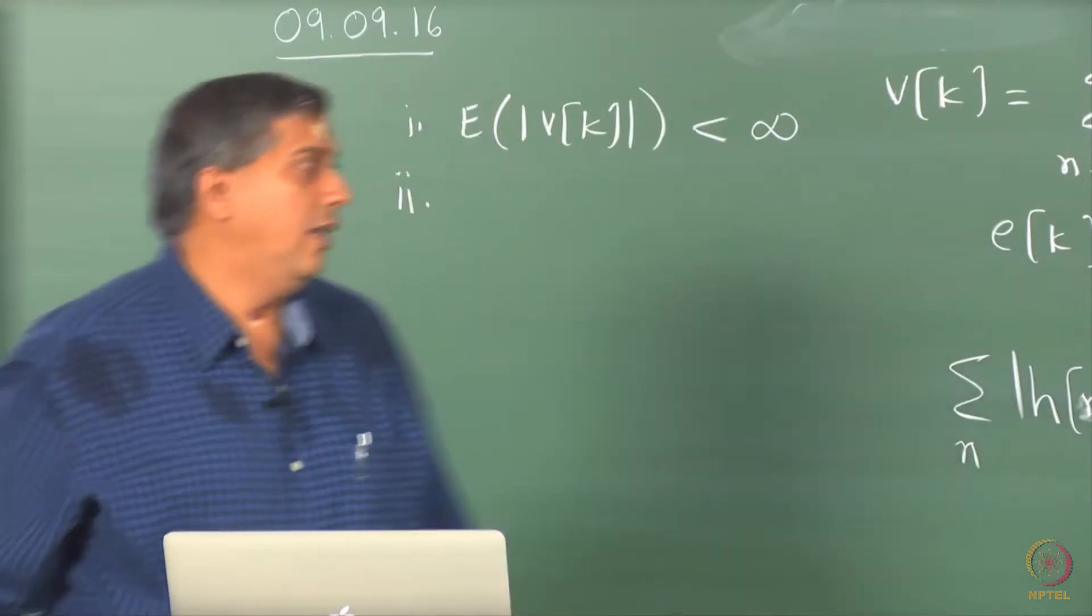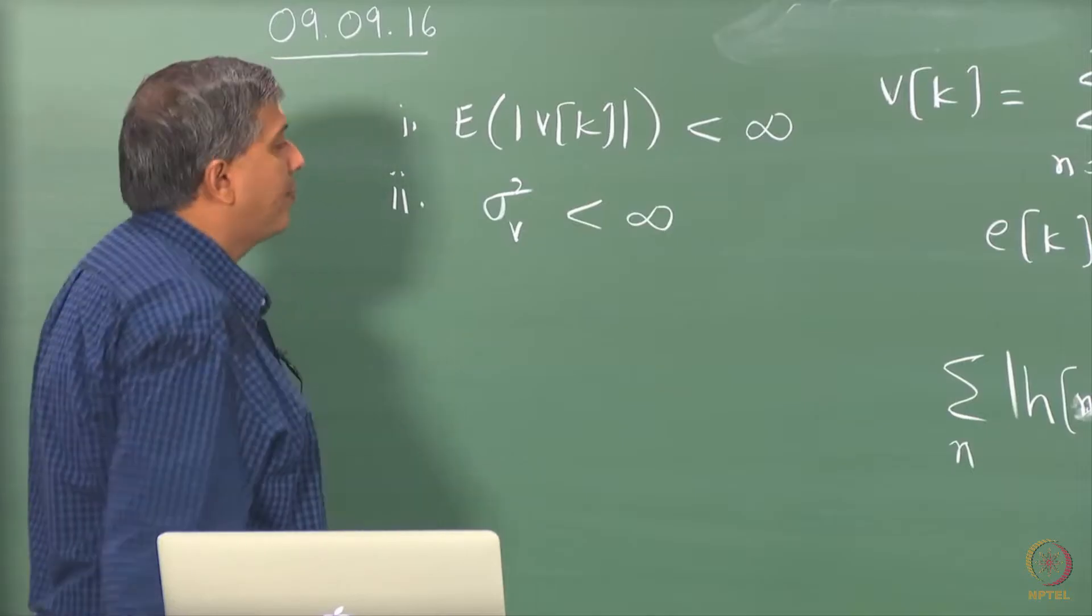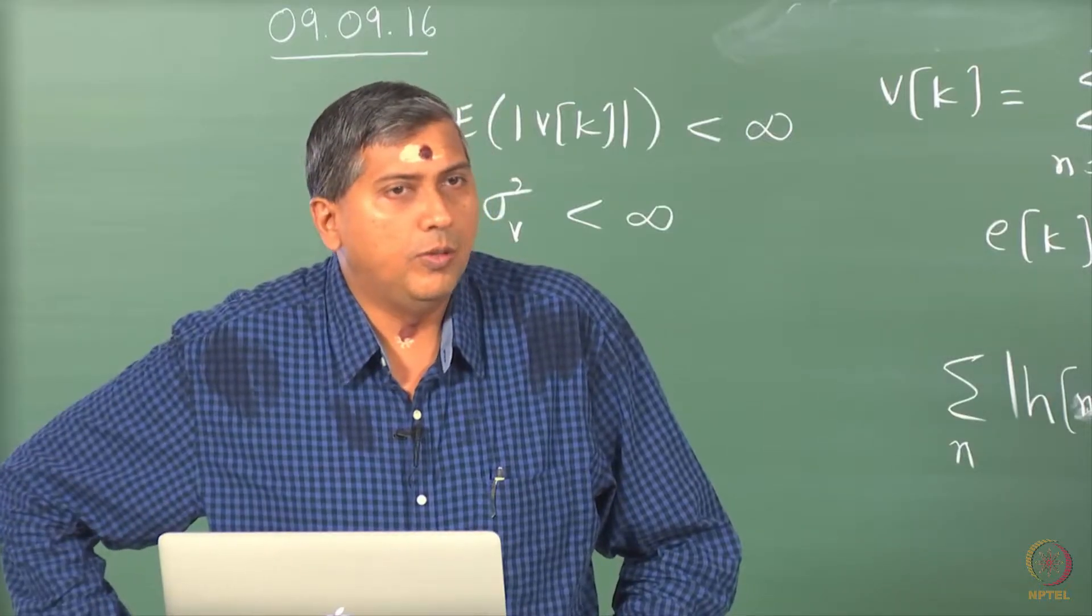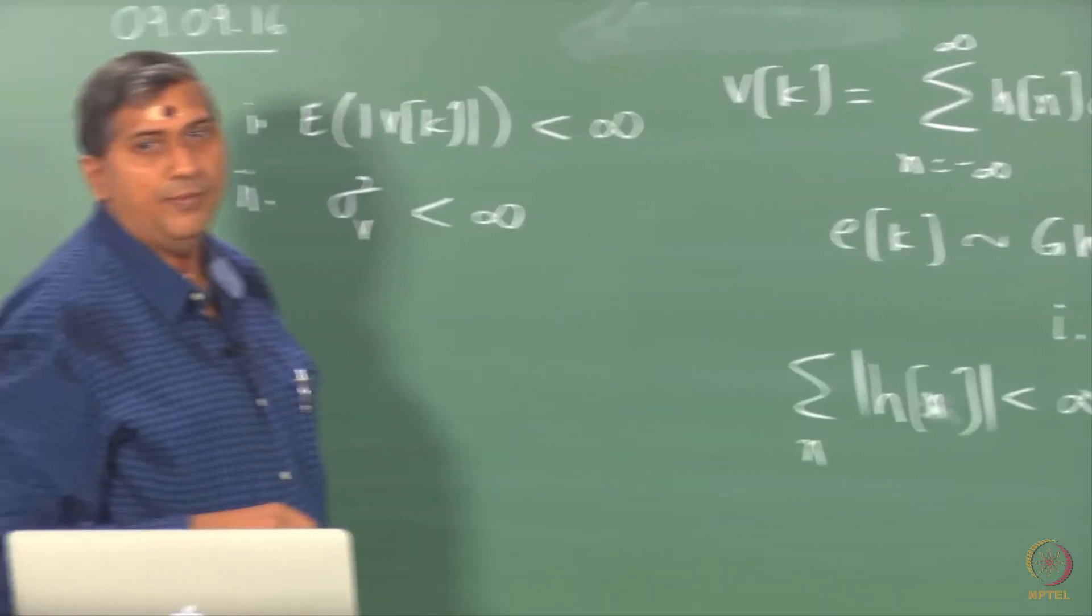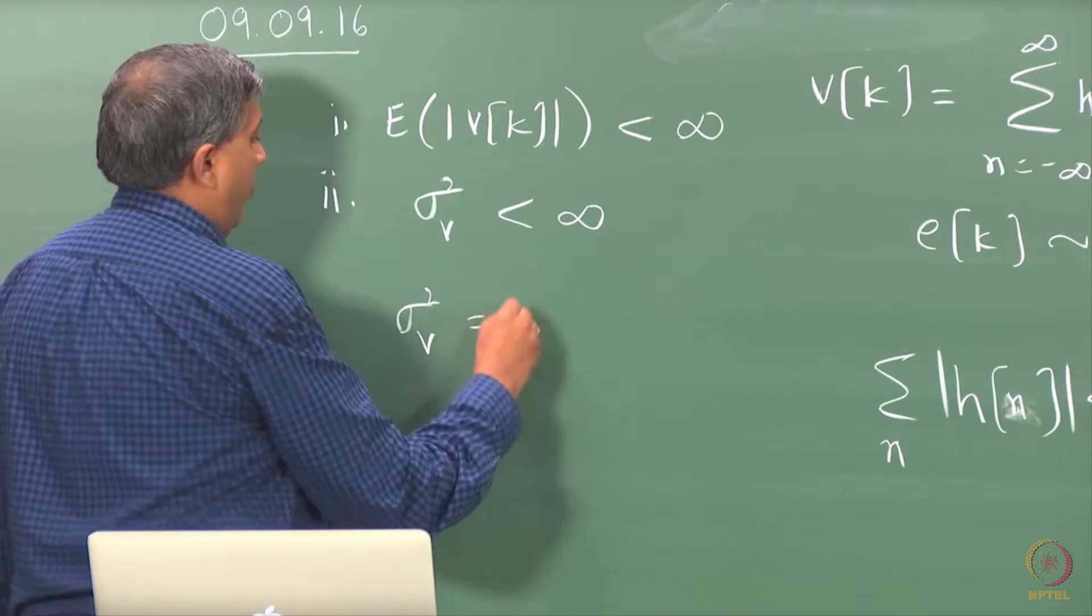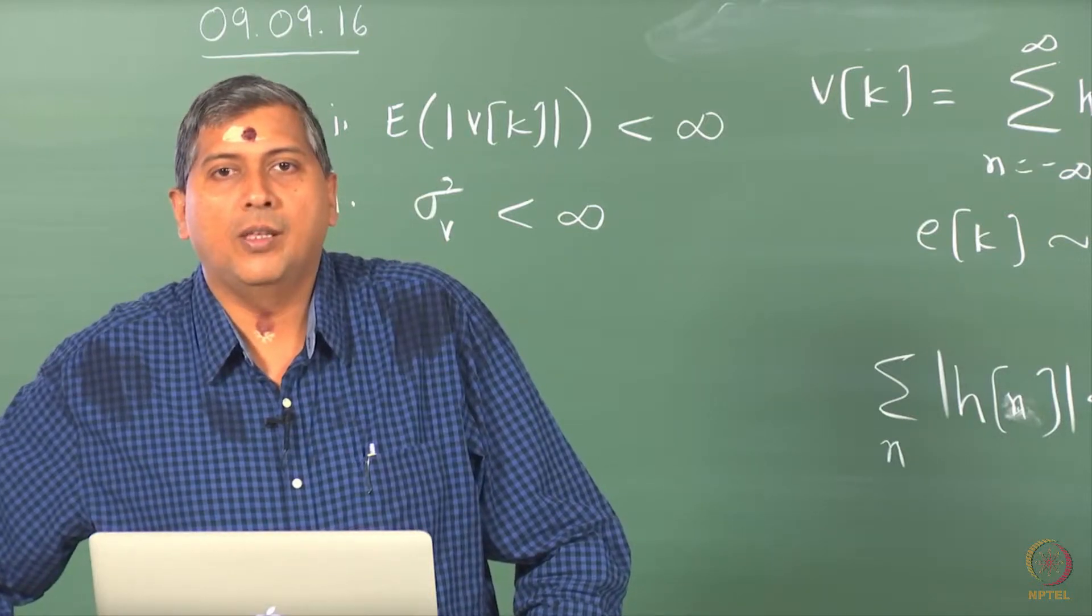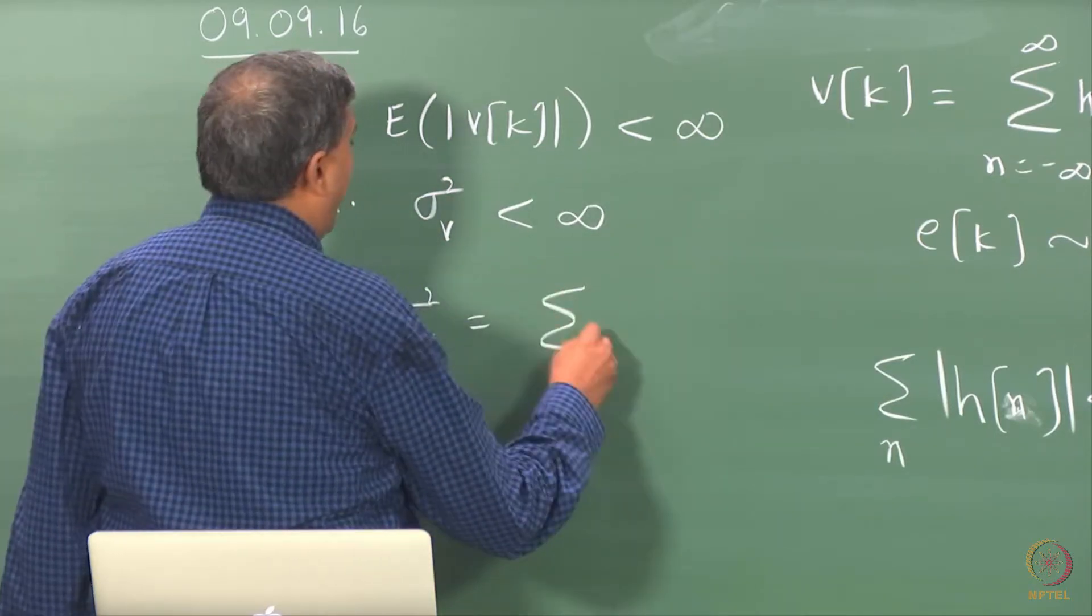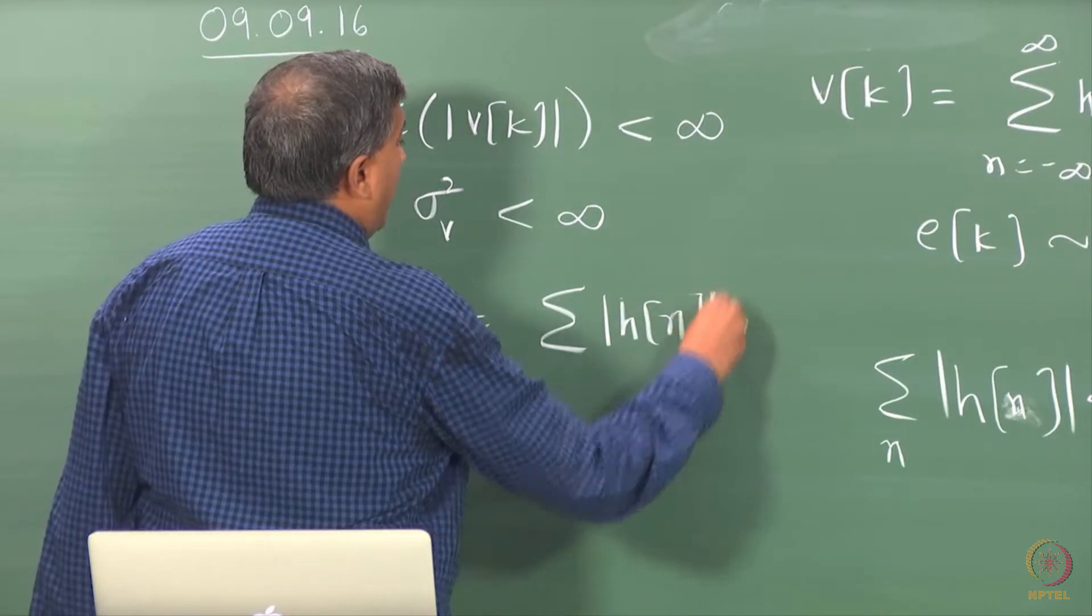What is the second condition? Variance should be finite, right? Now, we want sigma square V to be less than infinity. It turns out that again this condition guarantees this. I am not going to prove it, but it is fairly easy to see that. See, first of all, what would be variance of V? What is the expression for sigma square V?